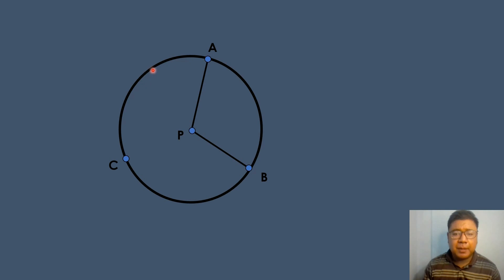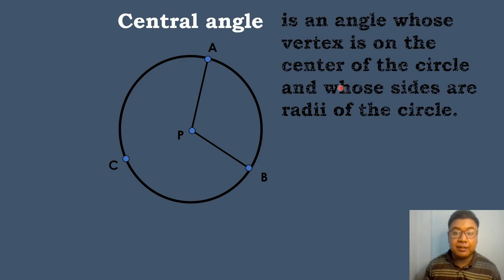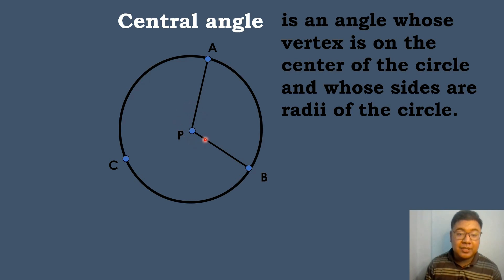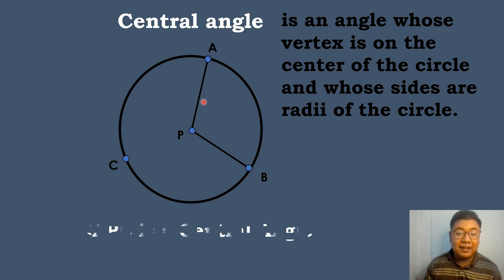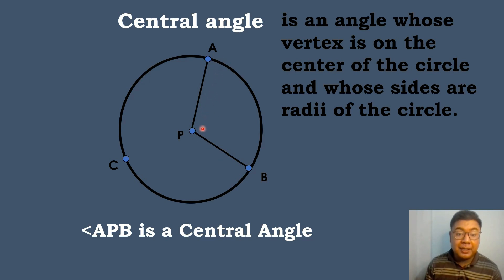The next part of the circle is the central angle. A central angle is an angle whose vertex is on the center of the circle and whose sides are radii of the circle. In this case, the center of the circle, which is point P, is also the vertex of the central angle, which is angle APB. The two radii are radius AP and radius PB. So angle APB is the central angle of circle P.